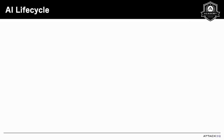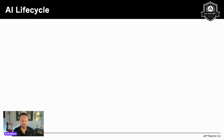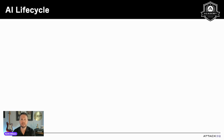Now let's quickly talk about the AI life cycle. Understanding when and where attacks occur during the life cycle is really how it's most beneficial for us as security practitioners. We'll use the example of developing an AI system for predicting customer churn — that's the likelihood of customers discontinuing their use of a service — to illustrate each stage of the AI life cycle.